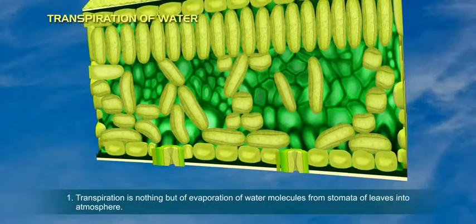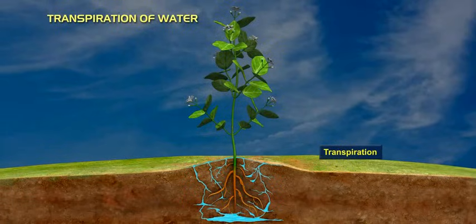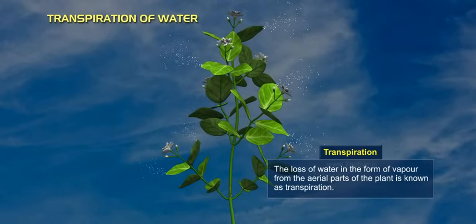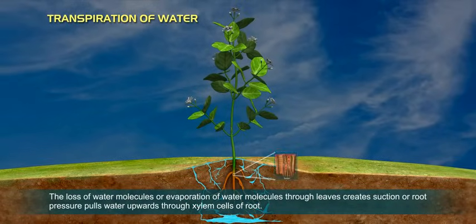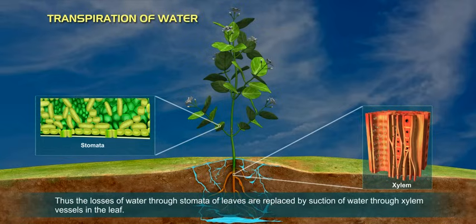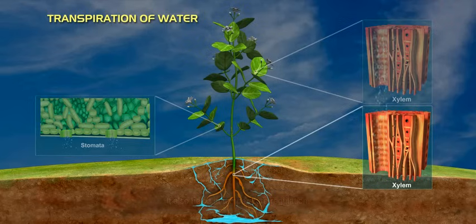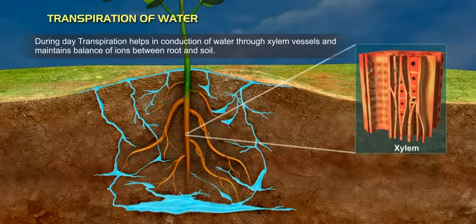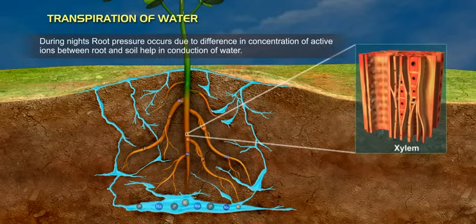The flow of water is bulk flow, and negative pressure facilitates movement of water and minerals into roots. Transpiration is the evaporation of water molecules from stomata of leaves into the atmosphere. Stomata are the guard cells. Transpiration is defined as the loss of water in the form of vapor from the aerial parts of the plant. The loss of water molecules through leaves creates suction or root pressure that pulls water upwards through xylem cells of root. Thus, losses of water through stomata of leaves are replaced by suction of water through xylem vessels in the leaf. Transpiration also helps in temperature regulation and maintains balance of ions between root and soil.